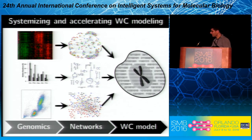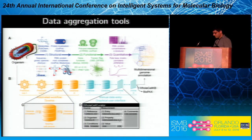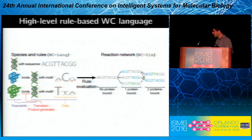We're going back at our process for building wholesale models — starting from genomic and biochemical data, organizing that data, building pathway submodels, and merging into a unified model — and reinventing every aspect of this process. One of the first things we're developing is new tools for aggregating the very large amount of data needed to build wholesale models.